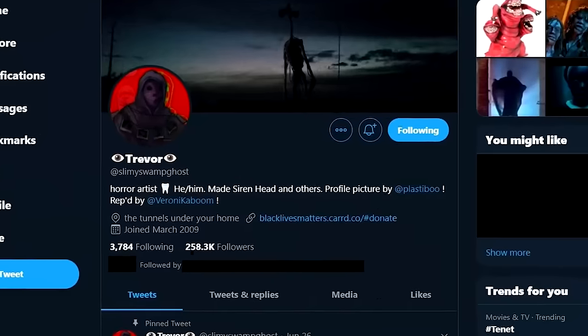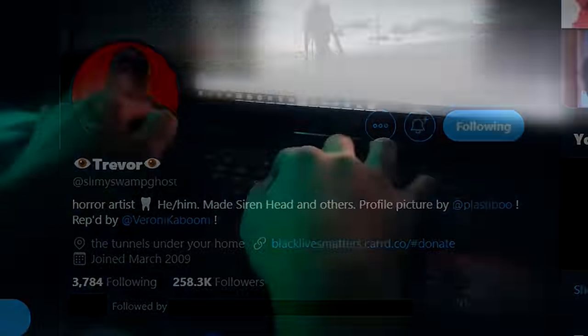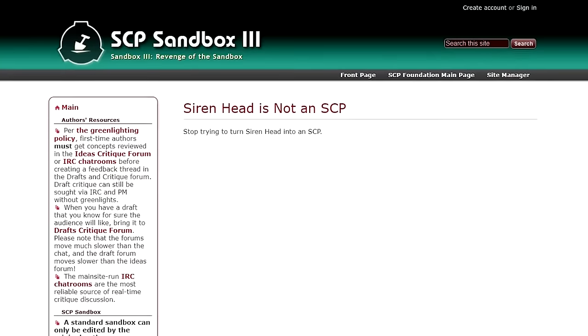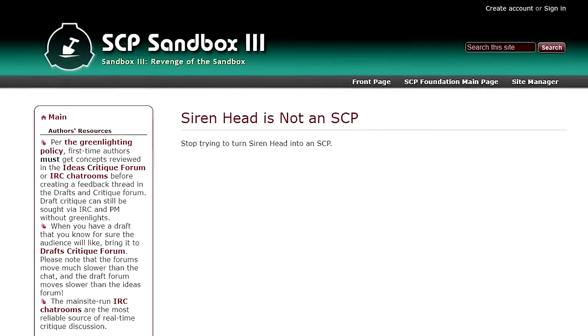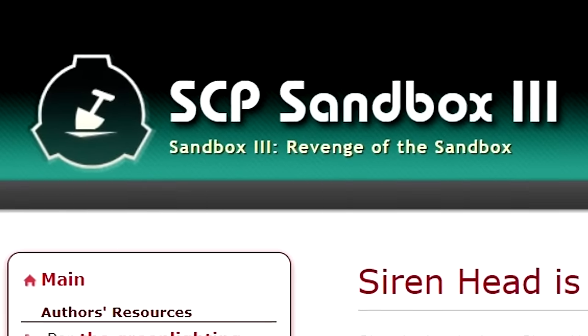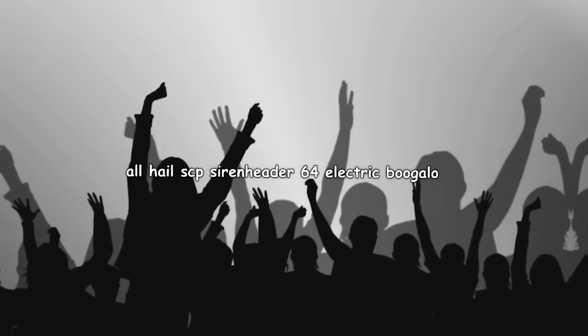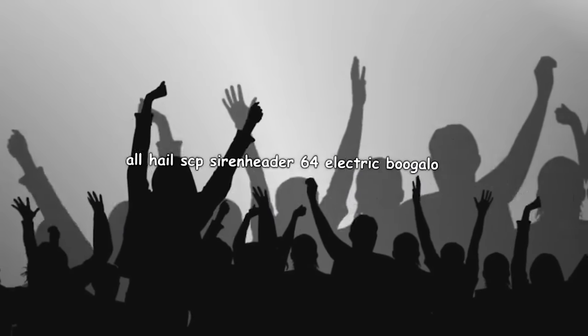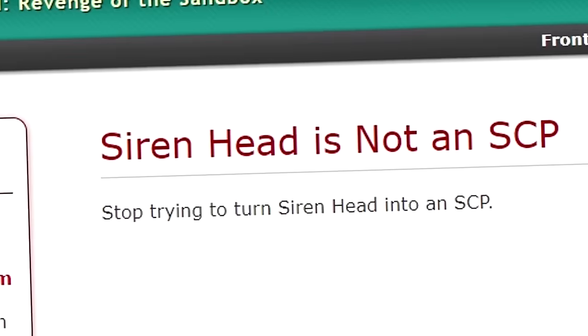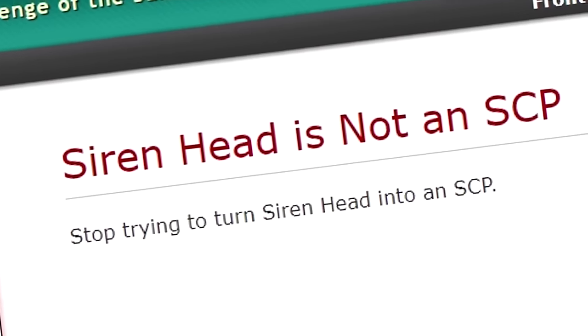Siren Head was created by Trevor Henderson in 2018. From there, somebody made an SCP document about Siren Head titled SCP-6789. This document was never on the official SCP Wiki. Instead, it was posted to one of our draft pages, known as a sandbox page. Eventually, the amount of people mistaking Siren Head for one of our creatures was to the point that SCP Wiki staff and Henderson together decided to delete that SCP-6789 draft page.